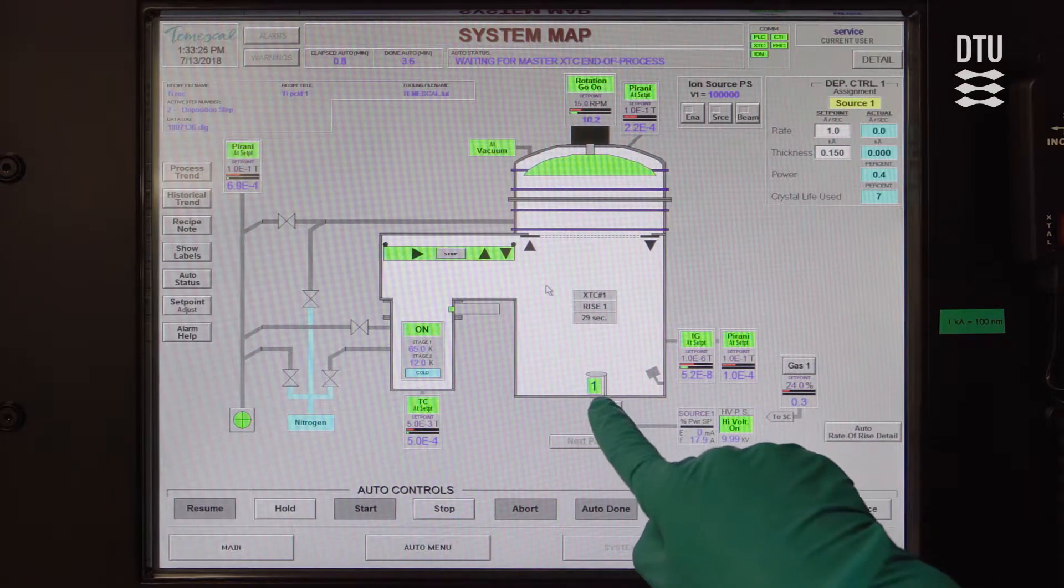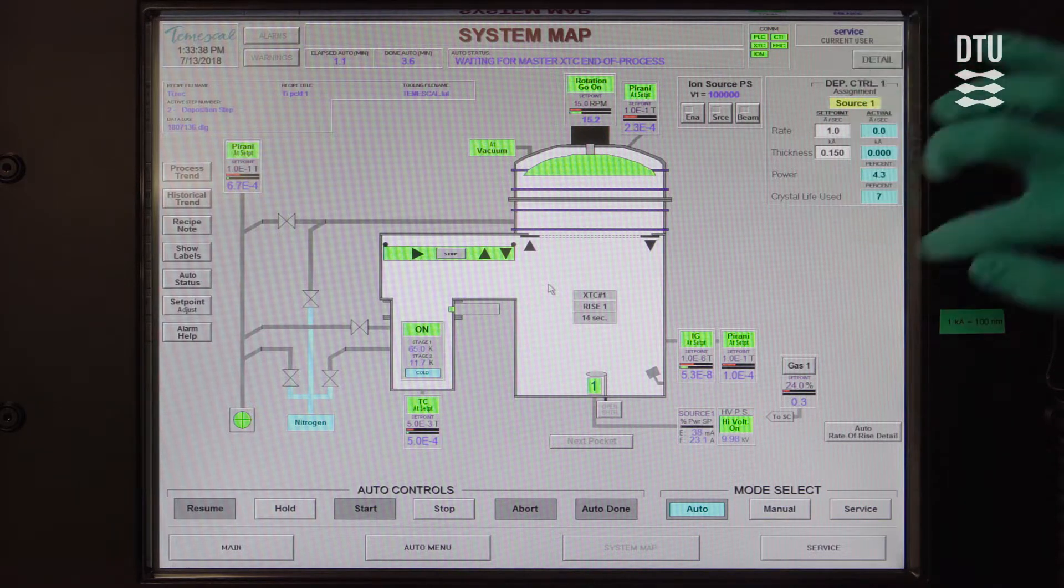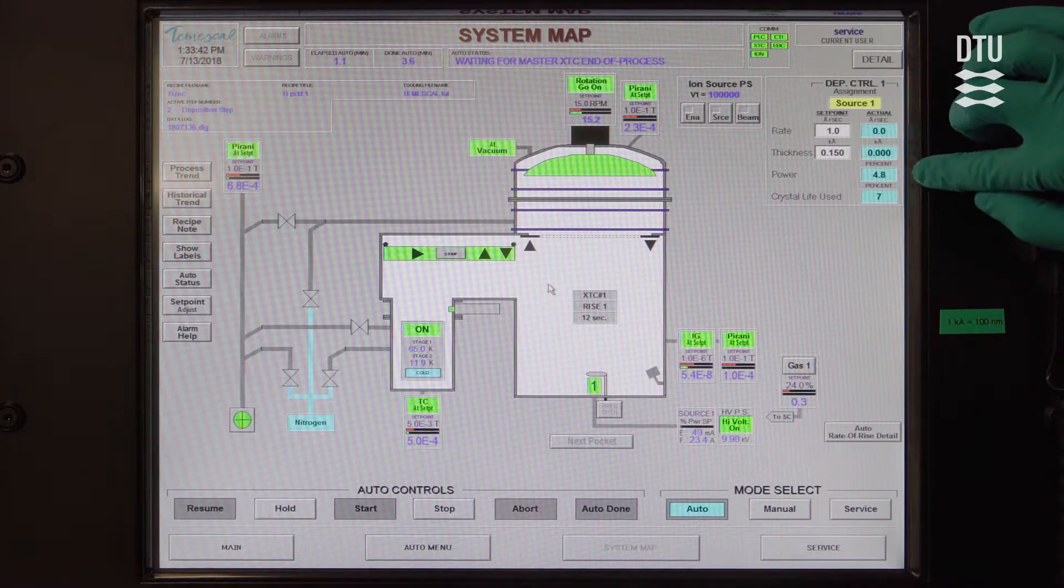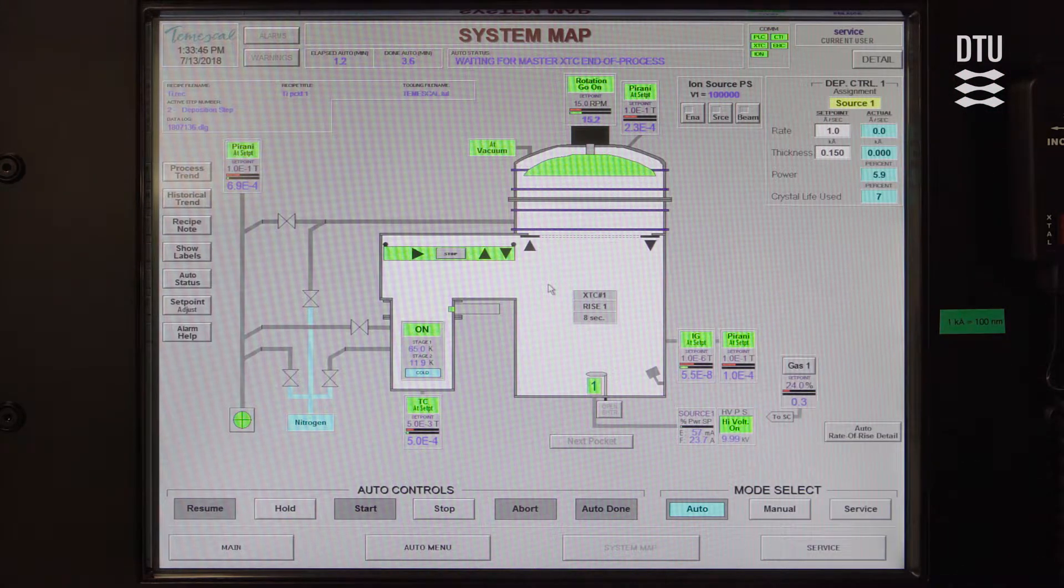And we can see that the source is active. And we are already now starting to put some power on the source. And you can see over in this part of the system map, you can follow what is going on and you can see the power that is being applied. And you can also see that we are in what is called rise one of the process.